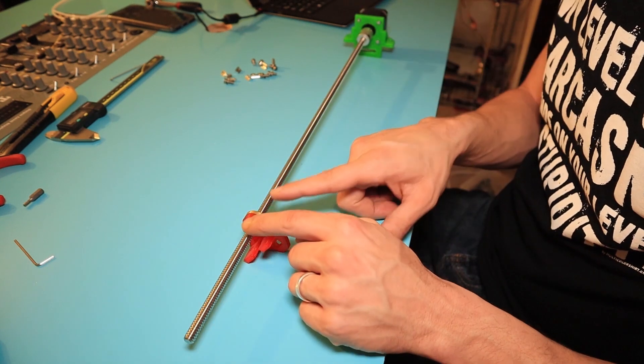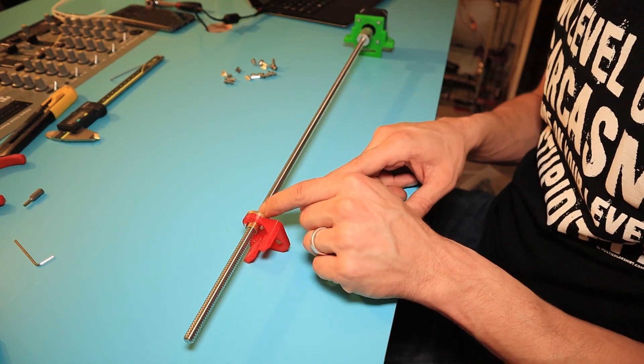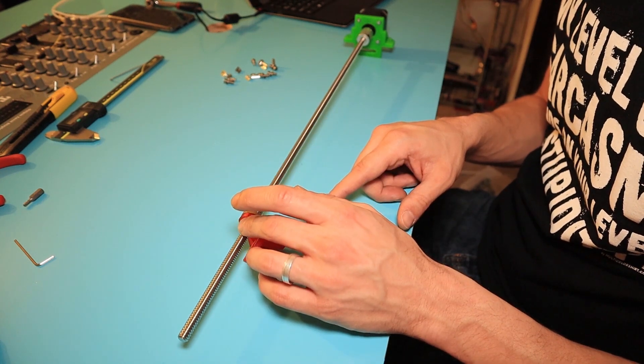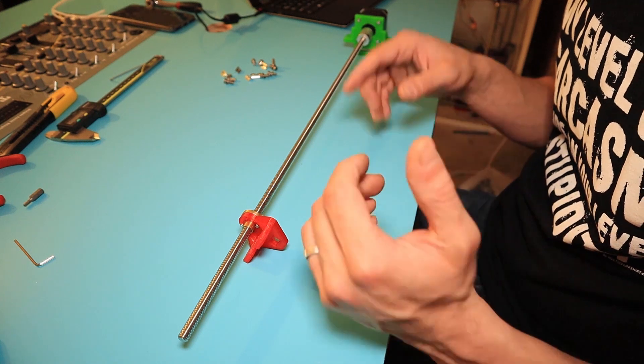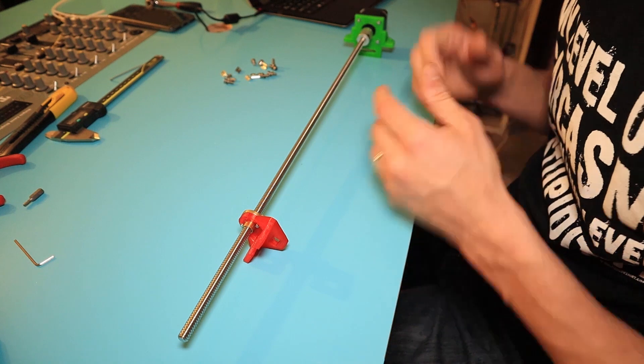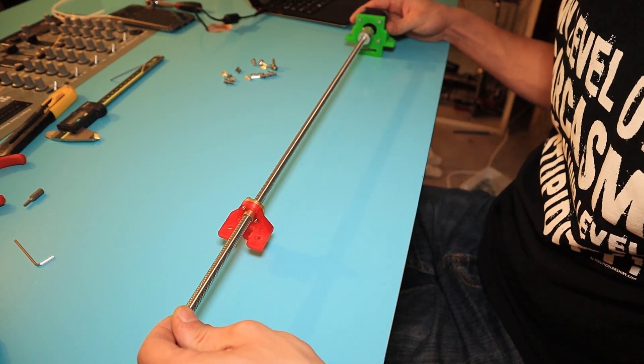All done. I would advise to put some lubrication on the copper nut—for example, a little bit of grease will be very useful. It still stays metal turning around metal and that isn't a good thing. So let's move over to the Hypercube and put it into place.